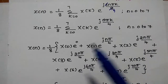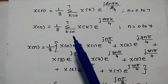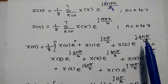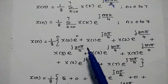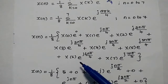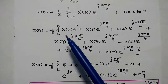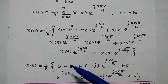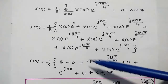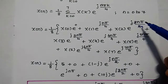Expanding the summation from k=0 to 7: X(0)·e^0 + X(1)·e^(jnπ/4) + X(2)·e^(j2nπ/4) + X(3)·e^(j3nπ/4) + X(4)·e^(j4nπ/4) + X(5)·e^(j5nπ/4) + X(6)·e^(j6nπ/4) + X(7)·e^(j7nπ/4). Substituting the values and simplifying, noting that 2/4 gives e^(jnπ/2) and 4/4 gives e^(jnπ).